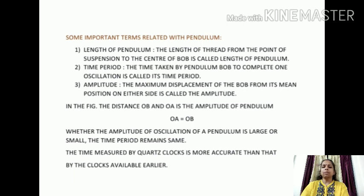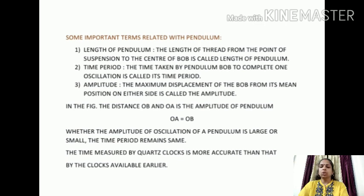The next term is time period. The time taken by the pendulum bob to complete one oscillation is called its time period. Since it is quite short, it cannot be measured accurately directly. So, to find the time taken for one oscillation, we measure the time taken by a large number of oscillations and calculate the time period by dividing the total time taken by the total number of oscillations. For example, we note down the time taken by the pendulum bob for completing 20 oscillations and divide this total time by 20 to get the time taken for one oscillation.